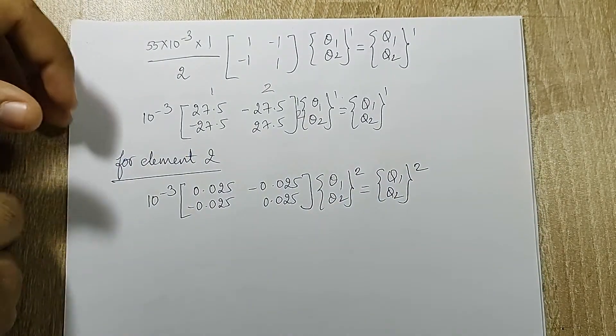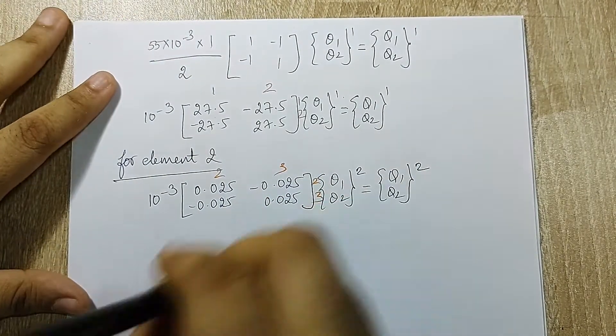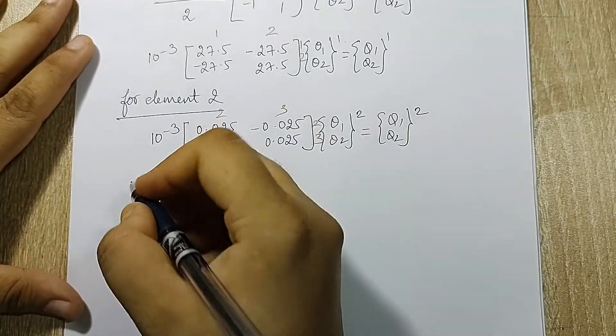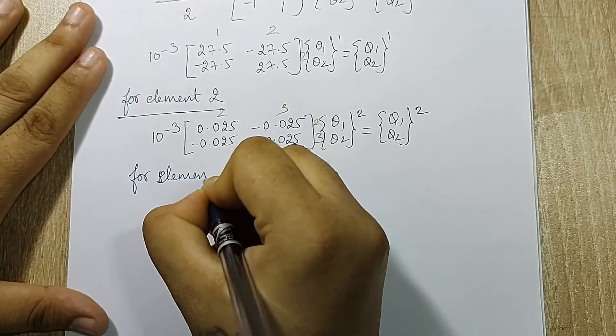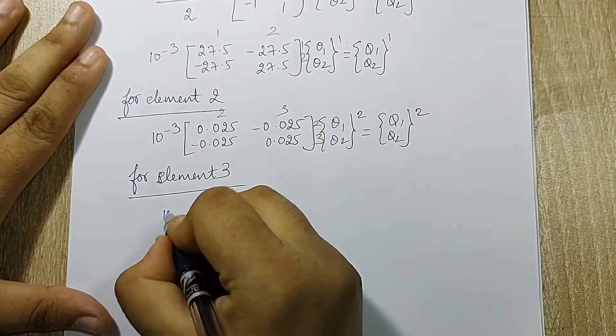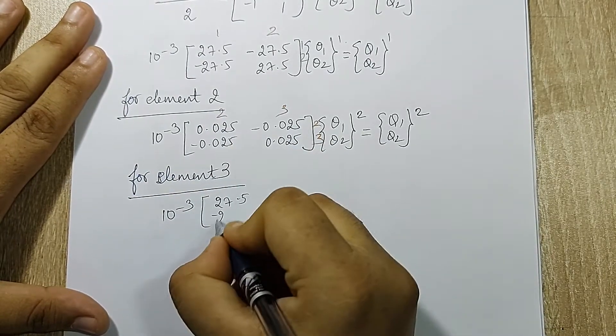Element 2 is between node 2-3. And for element 3, which is again my steel, values will be same. So I get the same answer, element 3, as 10 raise to minus 3, 27.5 is the multiplying number.